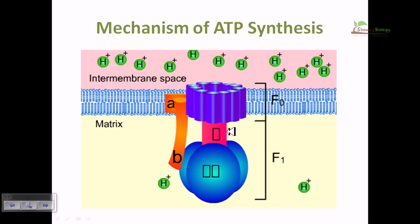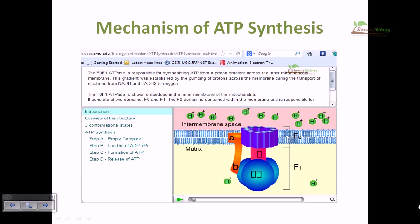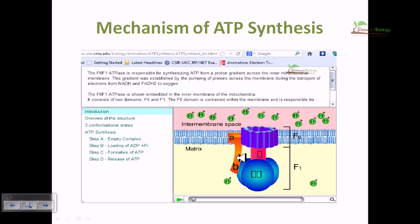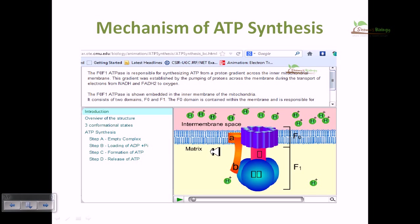Now we'll talk about the production of ATP during the electron transport chain. The key enzyme for ATP production is ATP synthase, embedded in the inner membrane of mitochondria. The F0-F1 ATP synthase is responsible for synthesizing ATP from the proton gradient across the inner mitochondrial membrane. This gradient was established by pumping protons across the membrane during transport of electrons from carriers such as NADH and FADH2. These are huge energy-containing molecules because they carry many electrons, generated during glycolysis and the Krebs cycle.